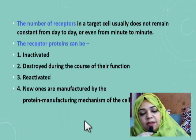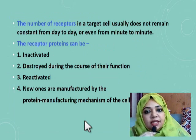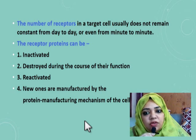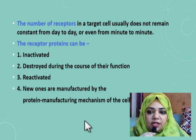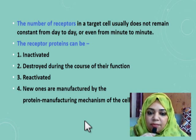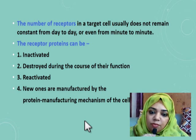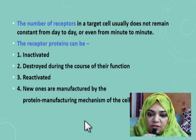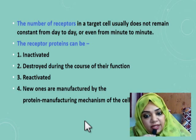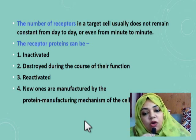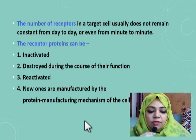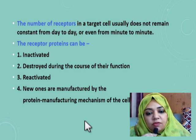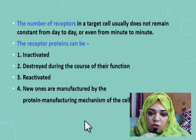The number of receptors in the target cell does not remain constant from day to day or even from minute to minute. These receptors are proteins — specifically cell membrane integral proteins — and they can be inactivated, destroyed, reactivated, or new receptors can be formed. So the number of active receptors is not constant.